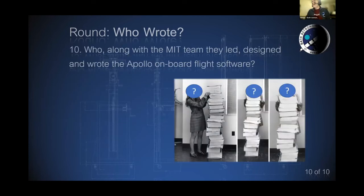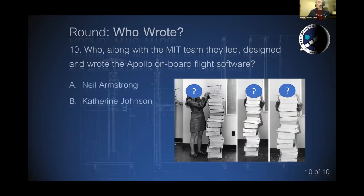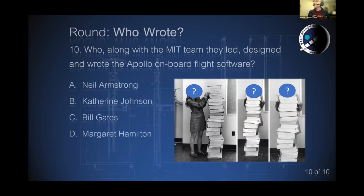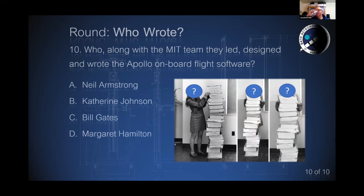And the final question of the evening: who, along with the MIT team they led, designed and wrote the Apollo onboard flight software? Was it Neil Armstrong, was it Katherine Johnson, was it Bill Gates, or was it Margaret Hamilton? Who wrote the software that landed the Apollo lander modules on the surface of the moon? If it was Bill Gates — blue screen!